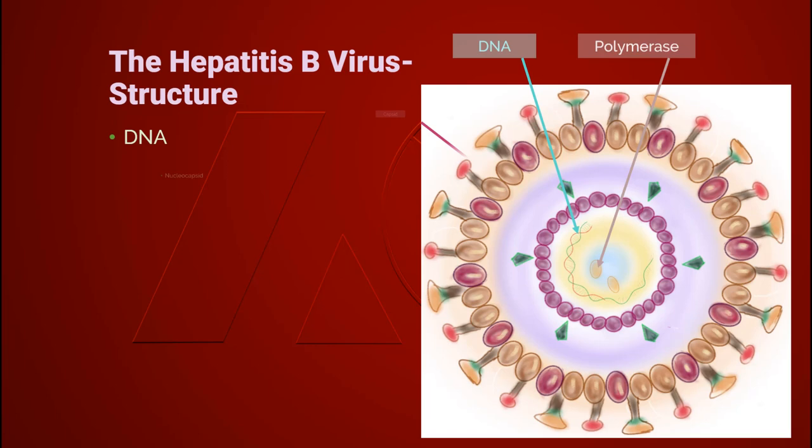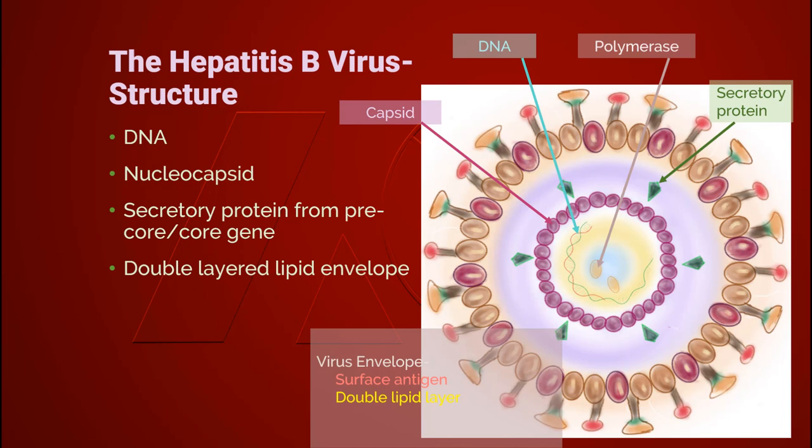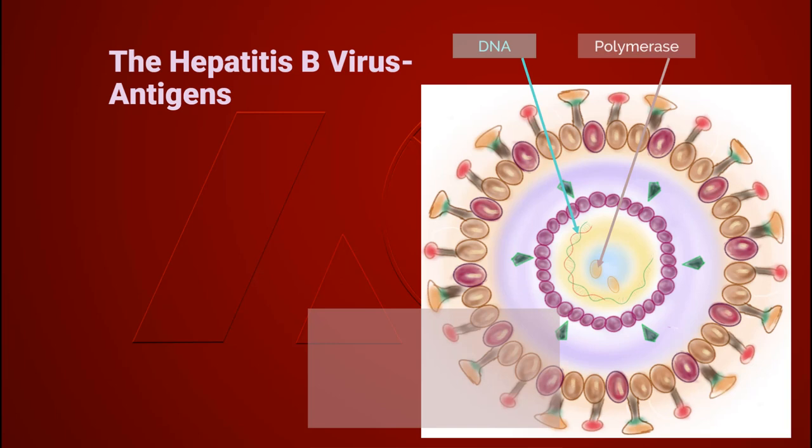The DNA of hepatitis B is protected by an icosahedral capsid. The outermost layer of the hepatitis B virus is the envelope, which includes surface antigen and the double lipid layer. Another important structure in the hepatitis B virus is the secretory protein, which is located between the layers of capsid and envelope.